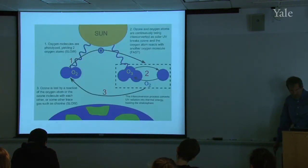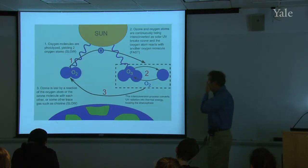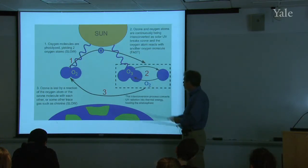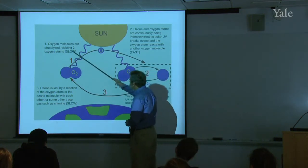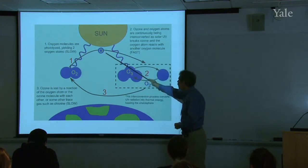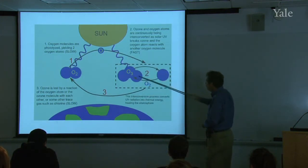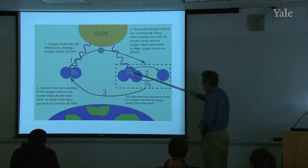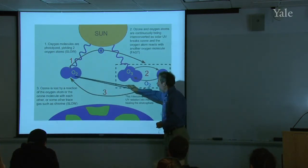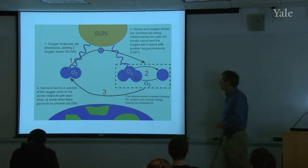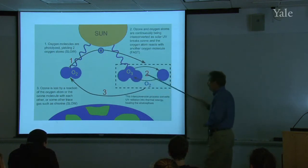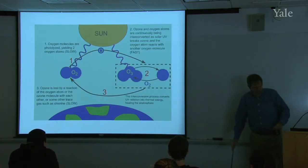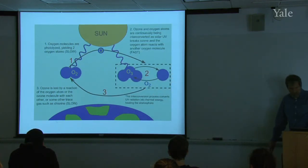This cartoon shows that: the sun occasionally dissociates O₂ to form atomic oxygen. You get rapid recycling between oxygen atoms and ozone. And occasionally you go back to O₂ again. The control of how much ozone you have is primarily the slow processes, not the rapid recycling of the two forms of oxygen.